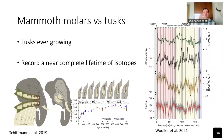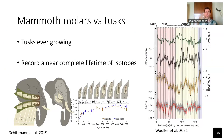Another reason pertains particularly to proboscidians — mammoths, elephants, and mastodons — because with enamel you can only analyze from molars, and molars only cover a certain part of an animal's life. If you've only got the first molar, you have information from the first few years of its life; the last molar, for mammoths the M6, covers perhaps the last 15 to 20 years of their lives.